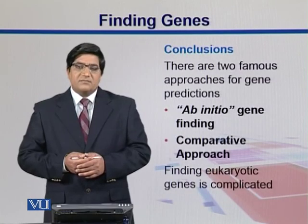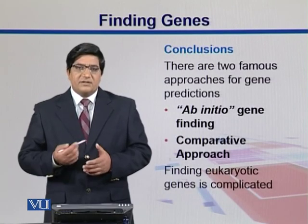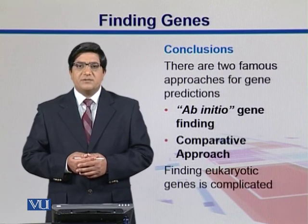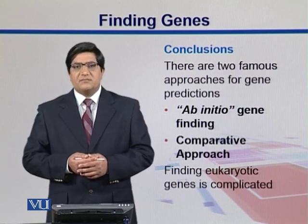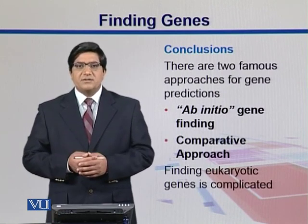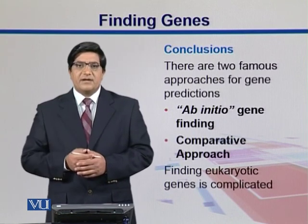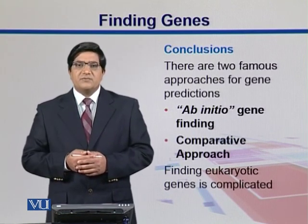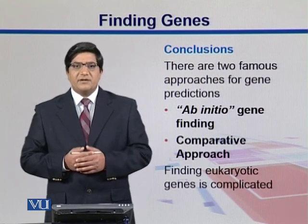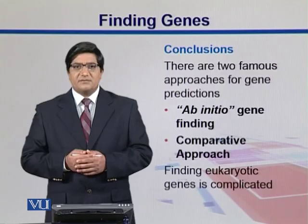In this section, we have seen that there are two approaches for gene prediction. One is ab initio — you start from scratch and try to get the patterns directly from the sequence. If you are comparing with some known genes, that approach is called comparative. Gene finding is not an easy task.